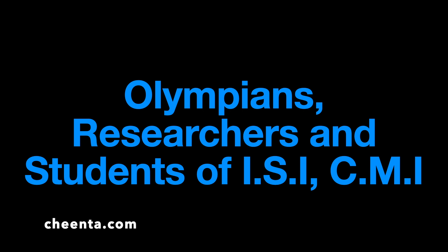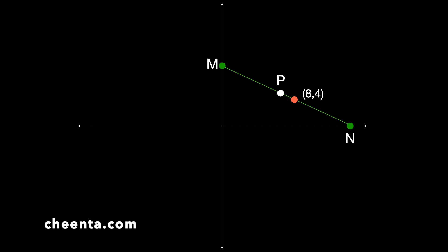Let's come back to the problem. We have segment MN passing through the point (8, 4), and P is the midpoint of MN. We want to find out what happens to P as MN moves, always passing through the point (8, 4).